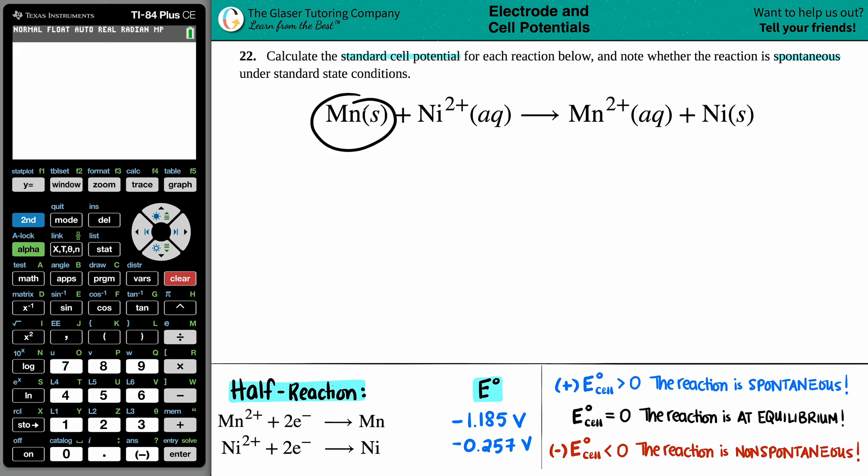So we got Mn solid plus Ni²⁺ aqueous yields Mn²⁺ aqueous plus nickel solid. Now from here we have to find a standard cell potential, and a standard cell potential is always E cell. It's going to be like a little E naught cell. That naught just means that we're under standard state conditions and that's what they asked for. Now what is the formula for a standard cell potential?